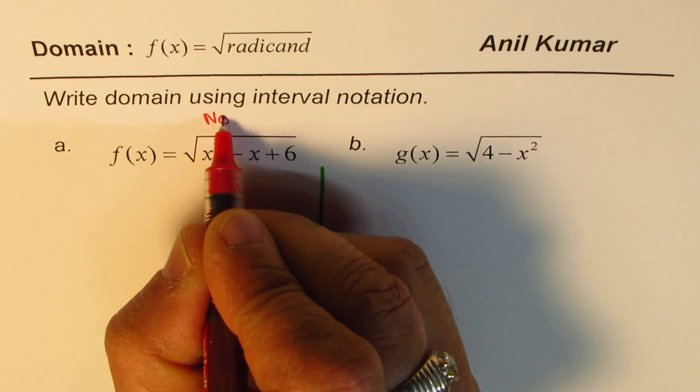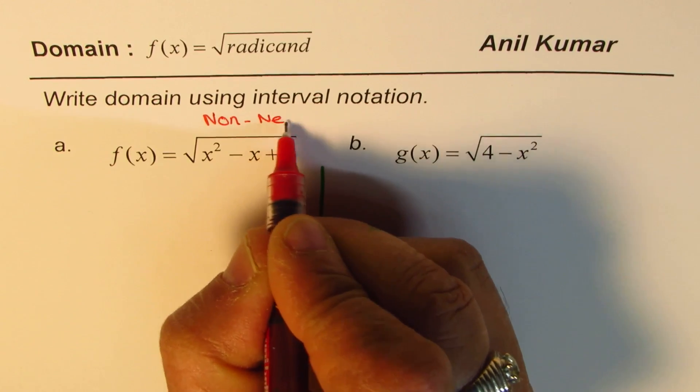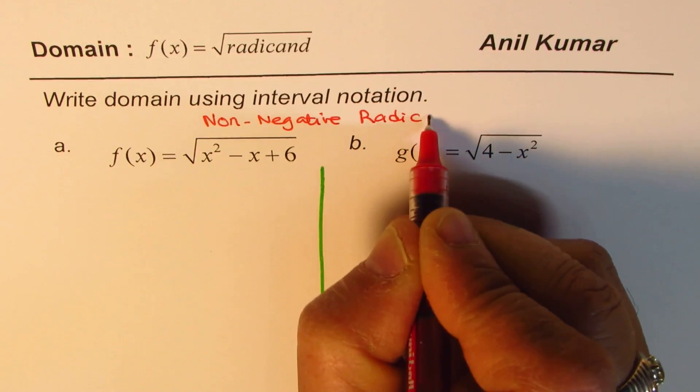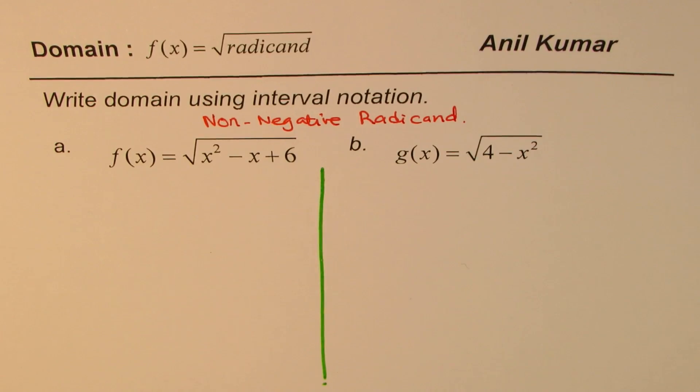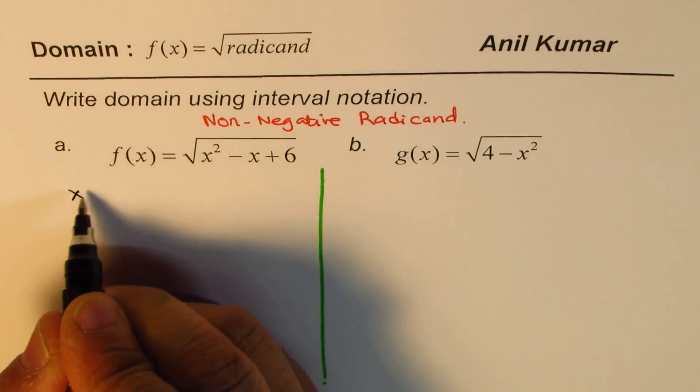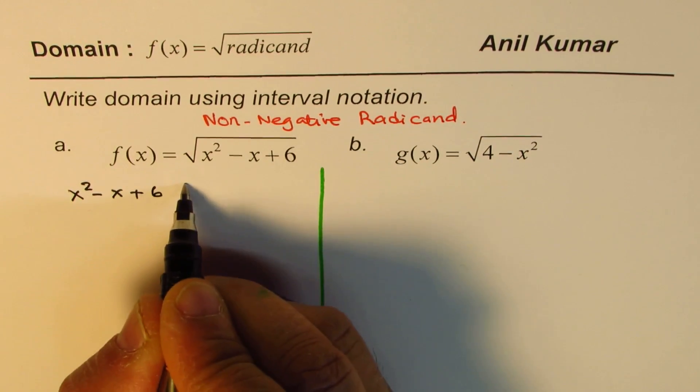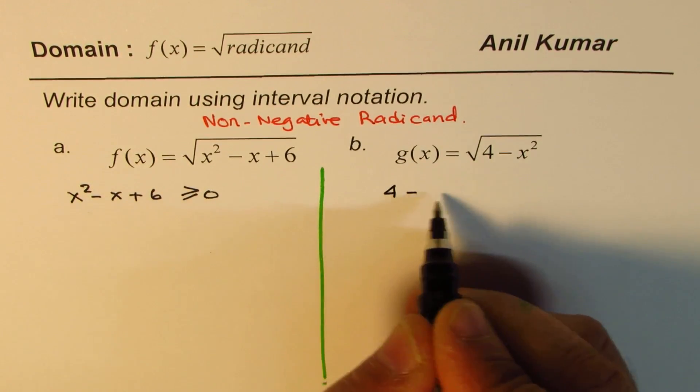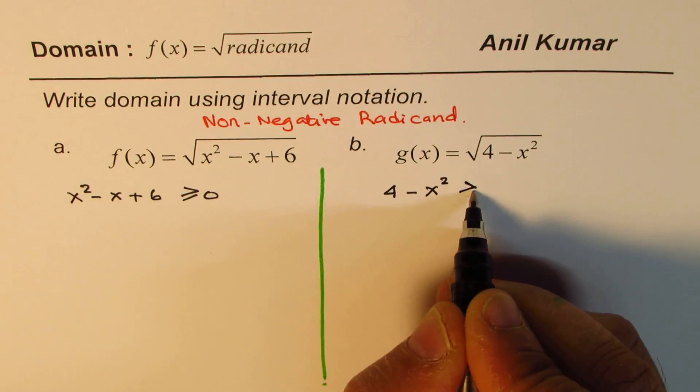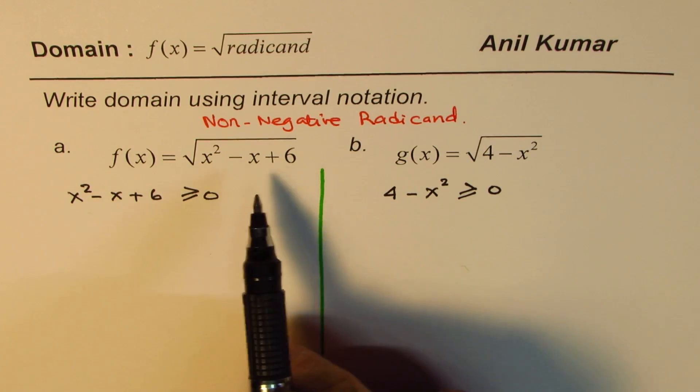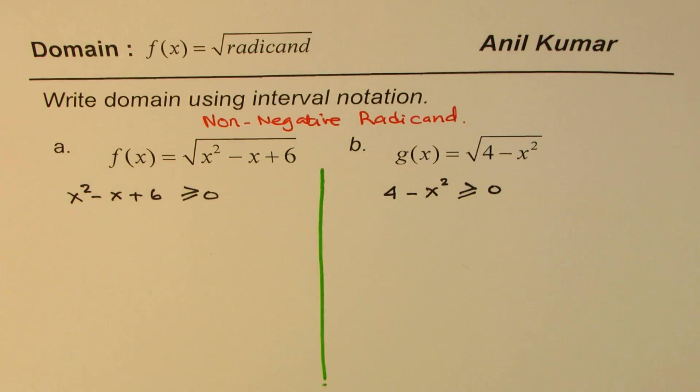So we are looking for non-negative radicand. That's the whole idea. So it really means that for f of x, x squared minus x plus 6 should be greater than or equal to 0, and for g of x, 4 minus x squared should be greater than or equal to 0. So all the values which x can take are part of our domain.